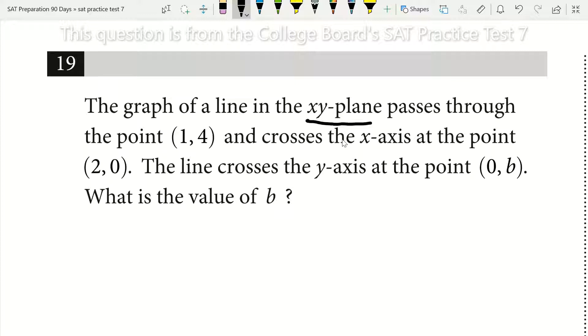So the graph of a line in the xy plane passes through the point (1, 4) and crosses the x-axis at point (2, 0). The line crosses the y-axis at the point (0, b). What is the value of b?